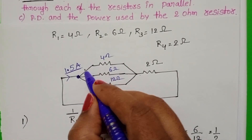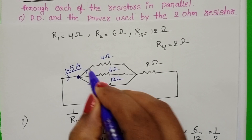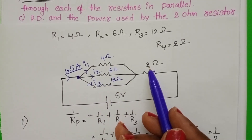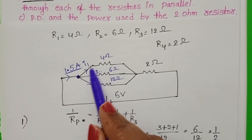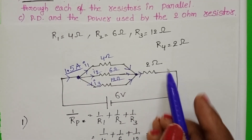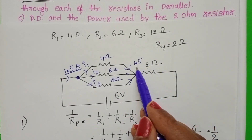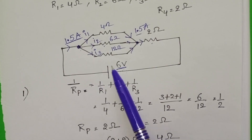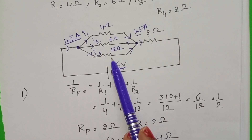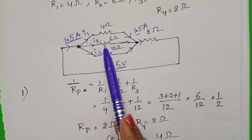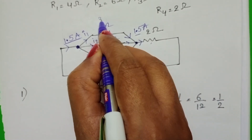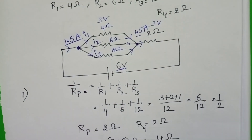This 1.5 amperes of current divides into I1, I2 and I3 because the three resistors are in parallel — in parallel, current divides. These three currents then combine at the junction point to flow through the series resistor, so the current passing through the 2 ohm resistor is again 1.5 amperes. Since both the parallel combination and the series resistor are each 2 ohm, the potential divides equally — 3 volt across each.